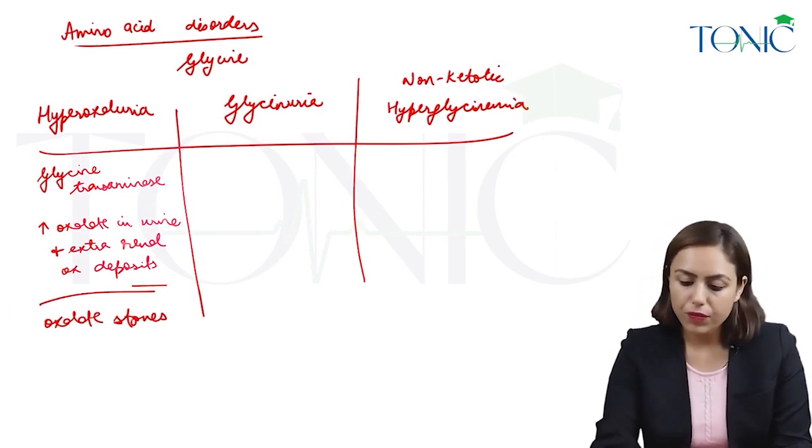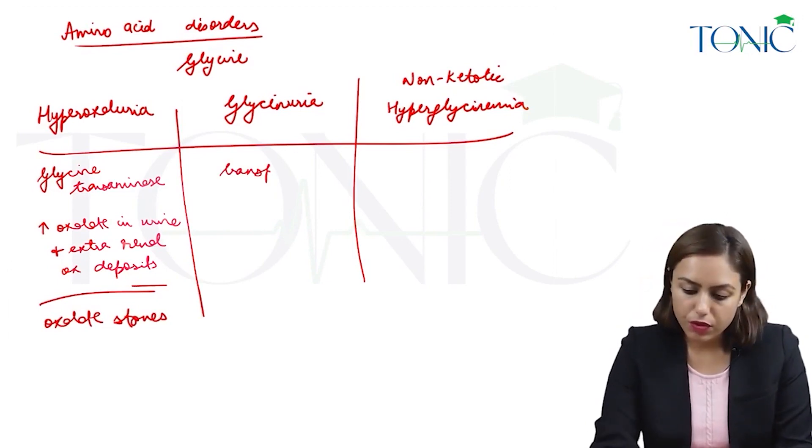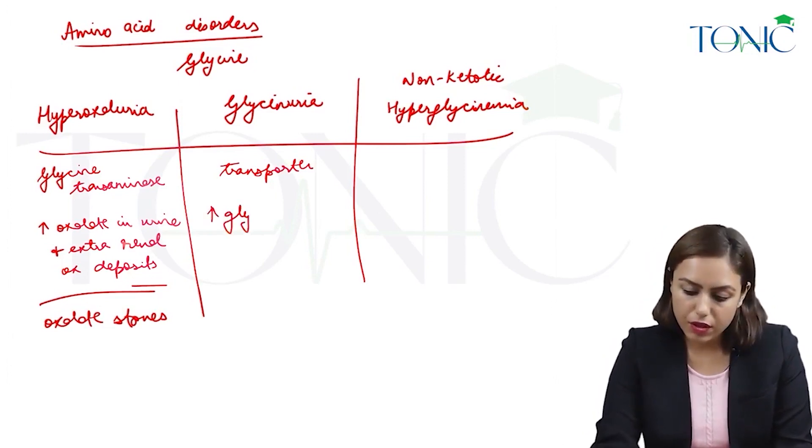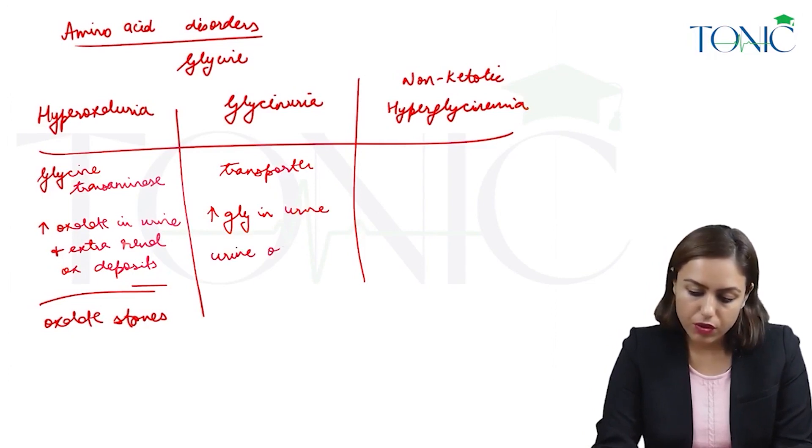Then glycinuria, the transporter which I just told you, the transporter is defective. These patients have increased glycine in urine, but urine oxalate is normal.